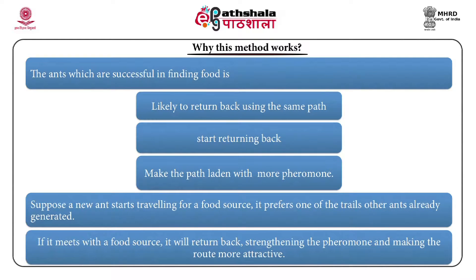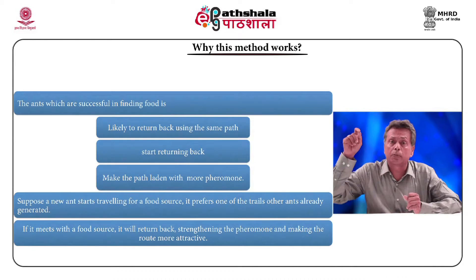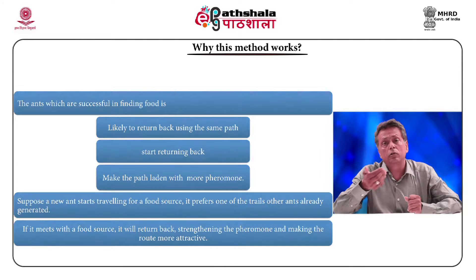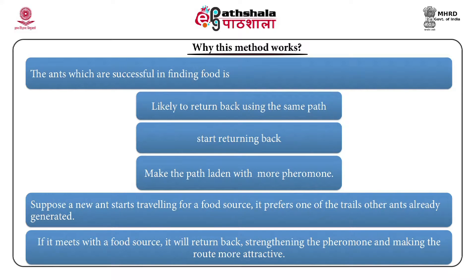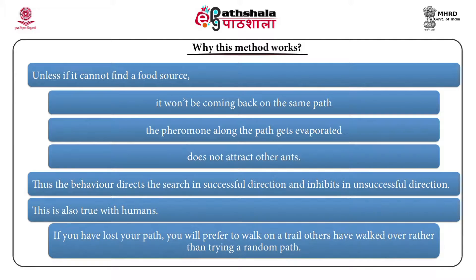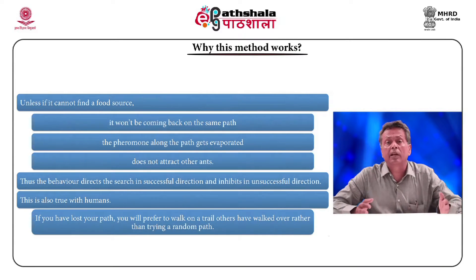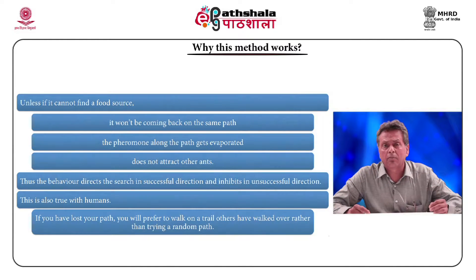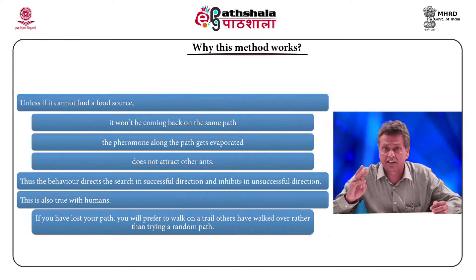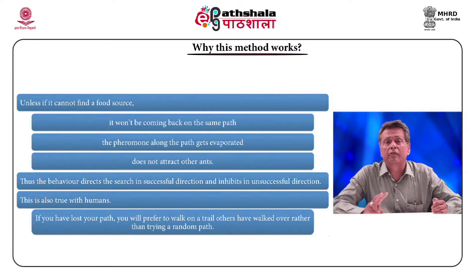If an ant has found a food source and another ant is looking for a path, there is a high probability the second ant chooses the same path. That ant also starts spraying pheromone along the same path, adding to the amount of pheromone — making the path more attractive for other ants. If an ant traveled a path without finding a food source, it won't come back, and the pheromone value will evaporate, making it less attractive.